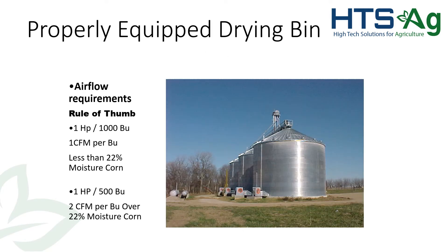Airflow is another key element. General rules of thumb: one horsepower per 1,000 bushels gives 1 CFM per bushel, which works for corn under 22% moisture. One horsepower per 500 bushels gives 2 CFM, which works for corn over 22% — though most bins probably don't have that. More likely you'll have one horsepower per 2,000 bushels at 0.5 CFM or less, even down to 0.25 CFM. At 0.25 CFM, we're not really going to be able to do much drying — we'll really only be able to change the temperature of the grain.